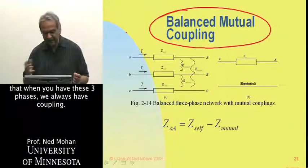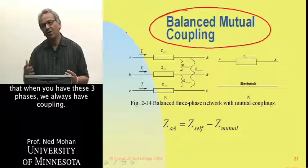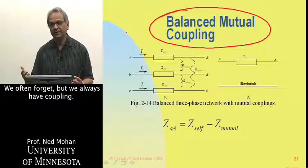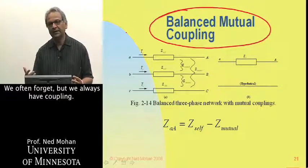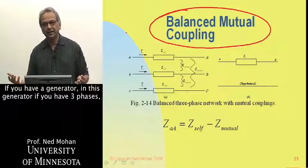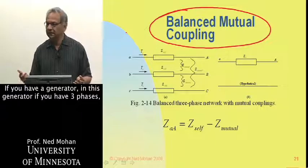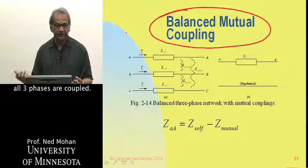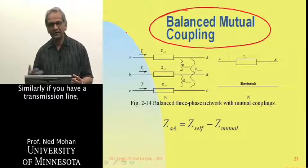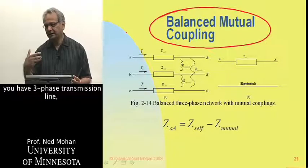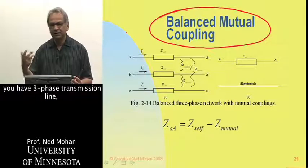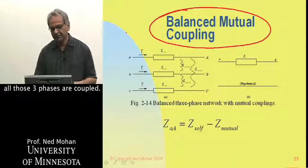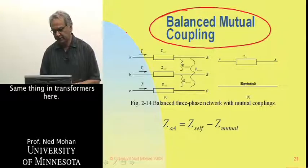When you have these three phases, we always have coupling — we often forget, but we always have coupling. If you have a generator with three phases, all three phases are coupled. Similarly, if you have a three-phase transmission line, all three phases are coupled. The same thing applies in transformers.